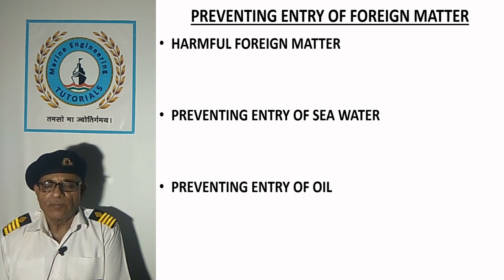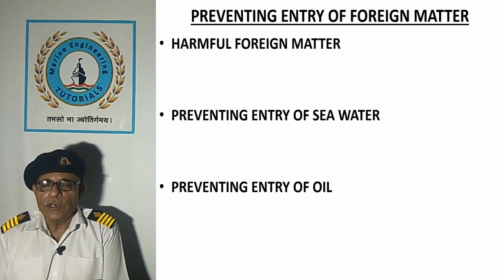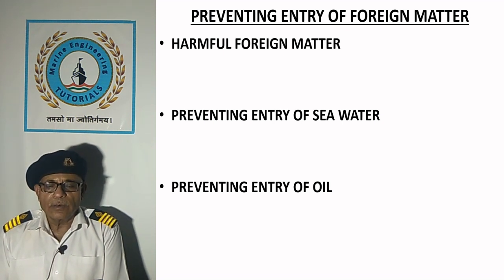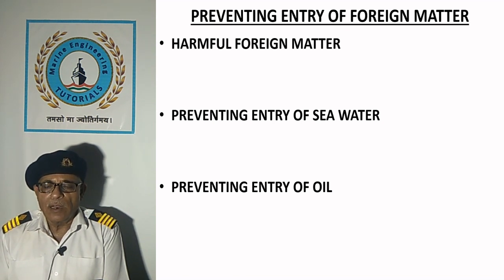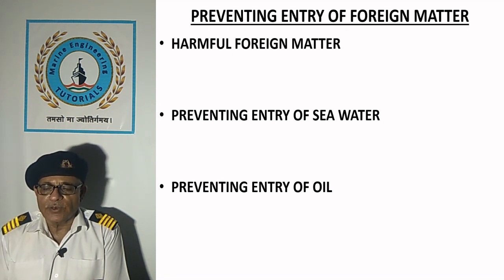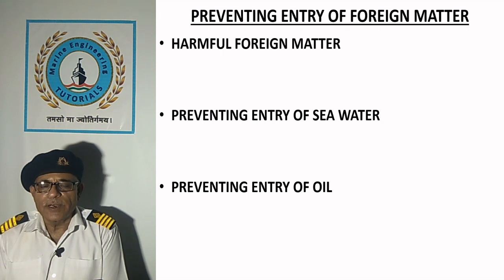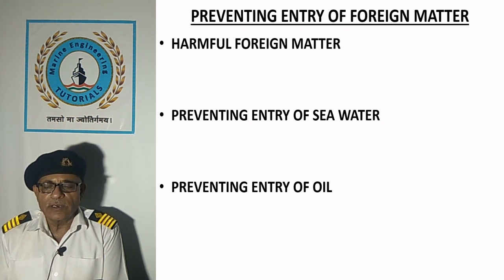Preventing entry of oil: steam is mainly used on motor ships for heating of fuel, lubricating, cargo oil or slops. Leakage of heating coils or tubes can result in entry of oil into the boiler through returning condensate. The arrangement of the cascade tank is such that if oil comes with the returning condensate, oil is easily detected from the observation tank and cannot easily pass to the boiler unless operators completely neglect it. Modern ships are equipped with an alarm if oil is detected in the observation tank.